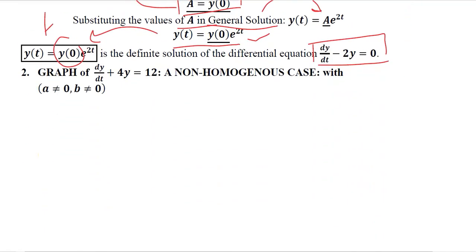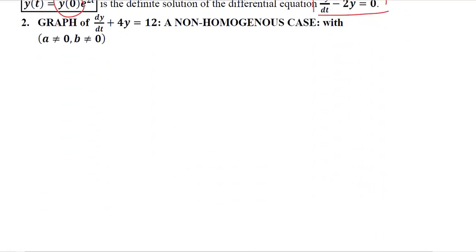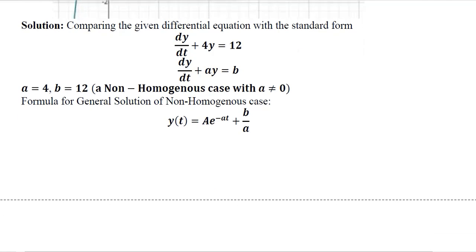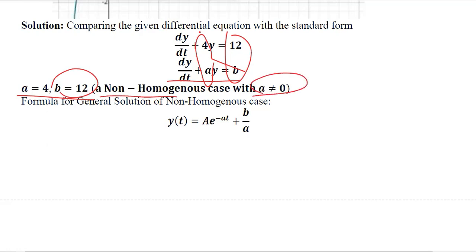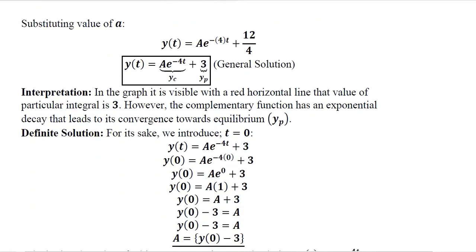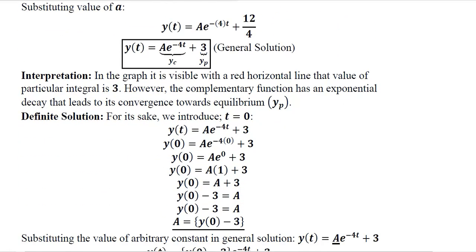Now we take an example of the non-homogeneous case where a is not equal to 0. Comparing with the standard form, we get a equals 4 and b equals 12. This is the non-homogeneous case with a not equal to 0. Substituting the values of b and a into the general solution formula, the complementary function shows the deviation from the equilibrium, and the particular solution represents the equilibrium itself.